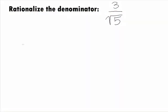In this example, we want to rationalize the denominator of the expression 3 over square root of 5. Note that the square root of 5 is not a rational number, so we want to find a way to make the denominator a rational number.